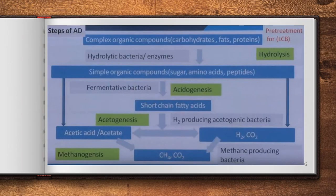The various steps of anaerobic digestion begin with raw materials — complex organic compounds such as carbohydrates, fats, and proteins. The first stage is hydrolysis, where hydrolytic bacteria convert complex organic compounds into simple organic compounds such as sugars, amino acids, and peptides. This is followed by acidogenesis, where fermentative bacteria degrade sugars and amino acids into short-chain fatty acids.